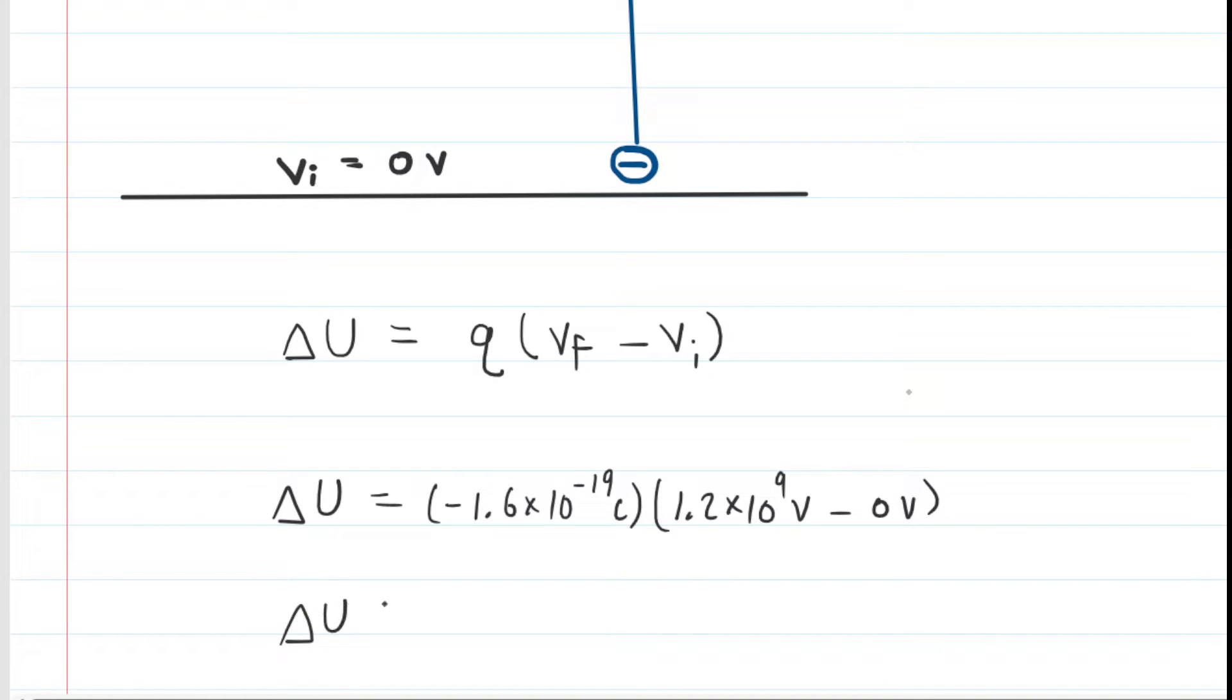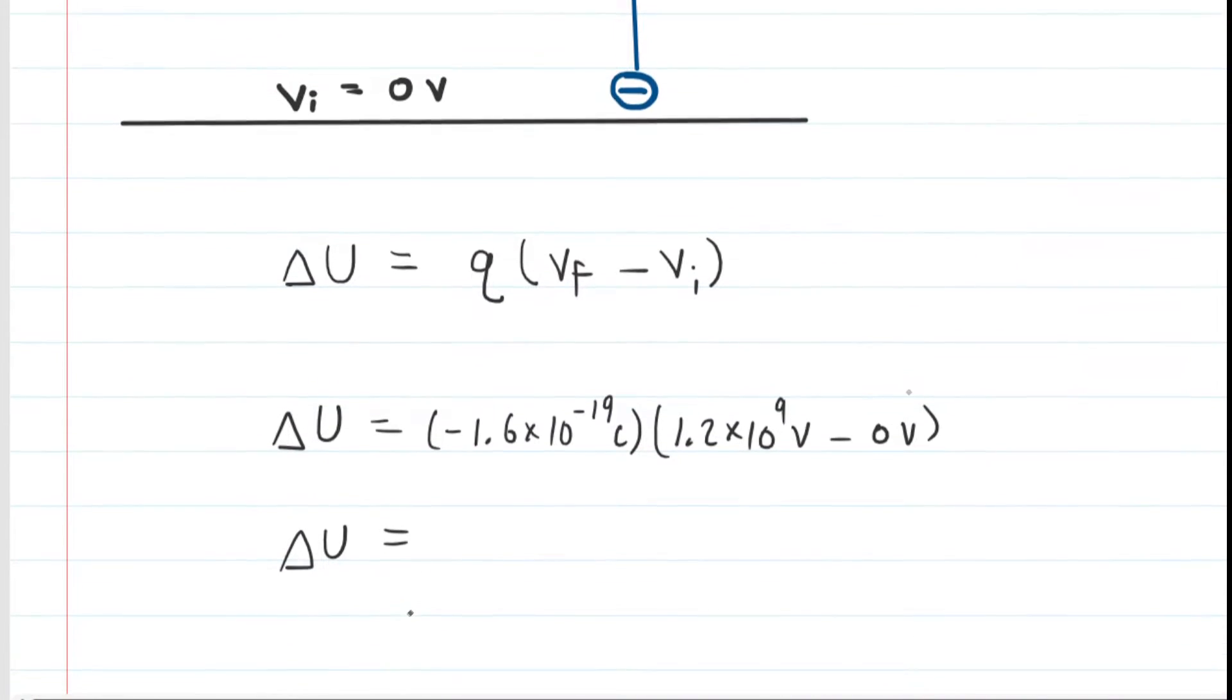And when we compute that, we can see that the change in electric potential energy for the electron is negative 1.92 times 10 to the negative 10. And the standard unit of energy is joules.